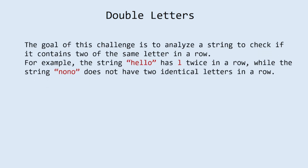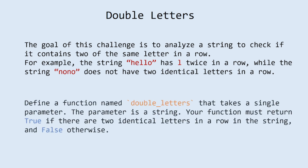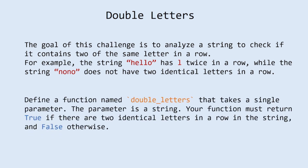And the last task is called double letters. Explanation: the goal of this challenge is to analyze a string to check if it contains two of the same letter in a row. For example, the string 'hello' has the letter 'l' twice in a row, while the string 'nono' does not. Define a function named double_letters that takes a single parameter — a string. Your function must return true if there are two identical letters in a row, and false otherwise.